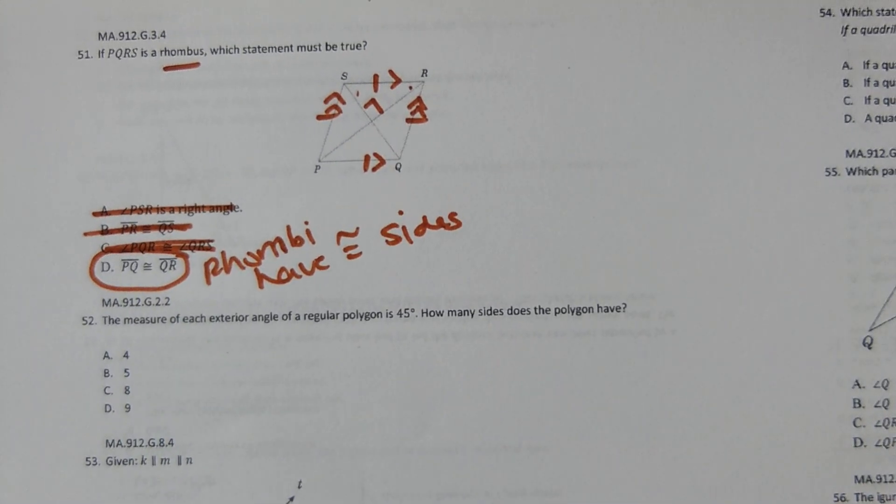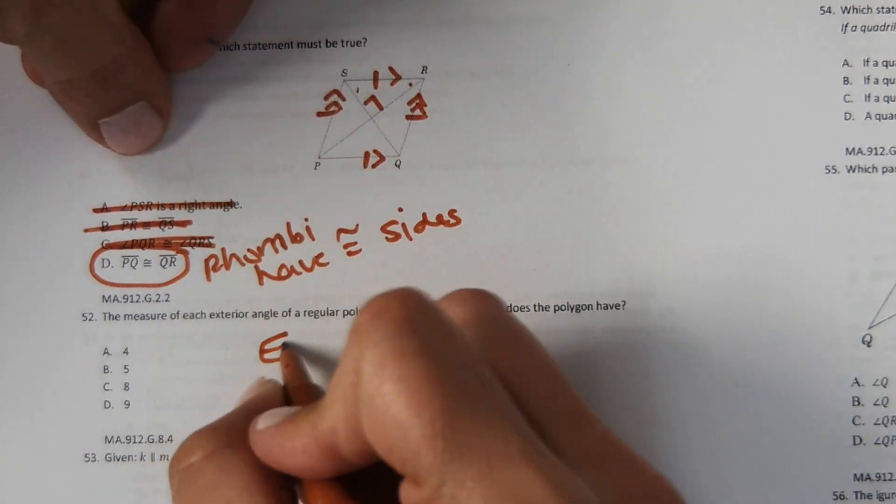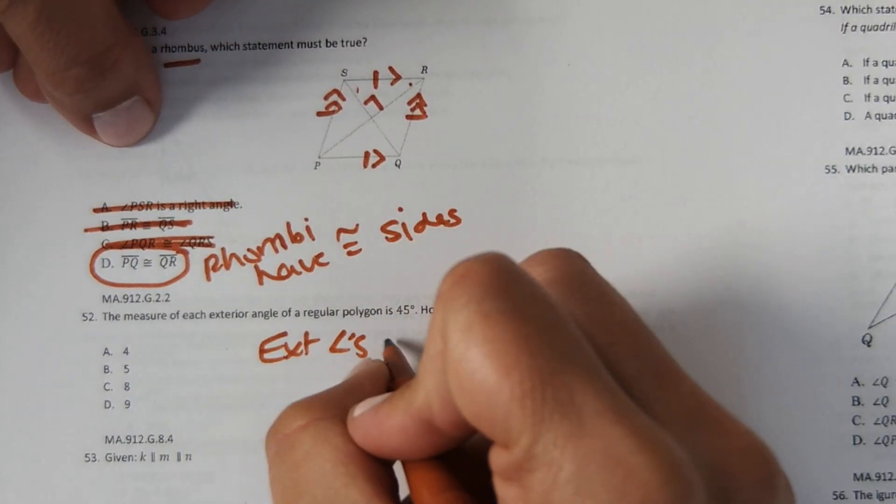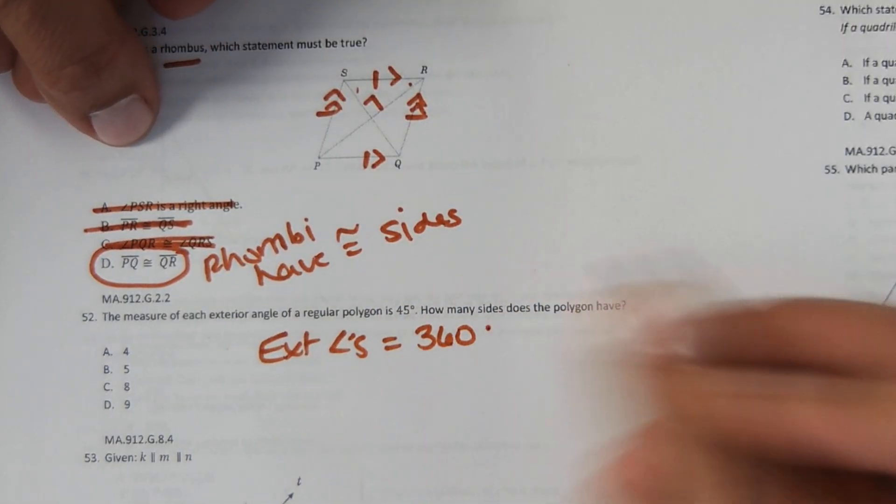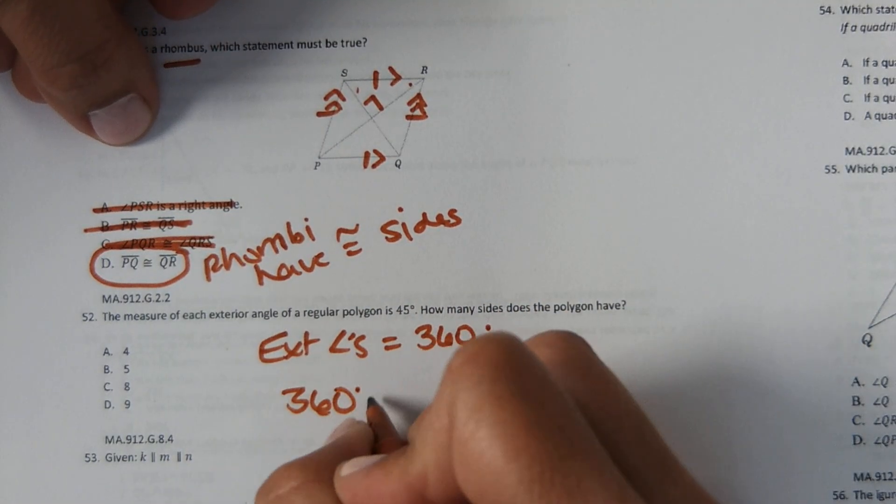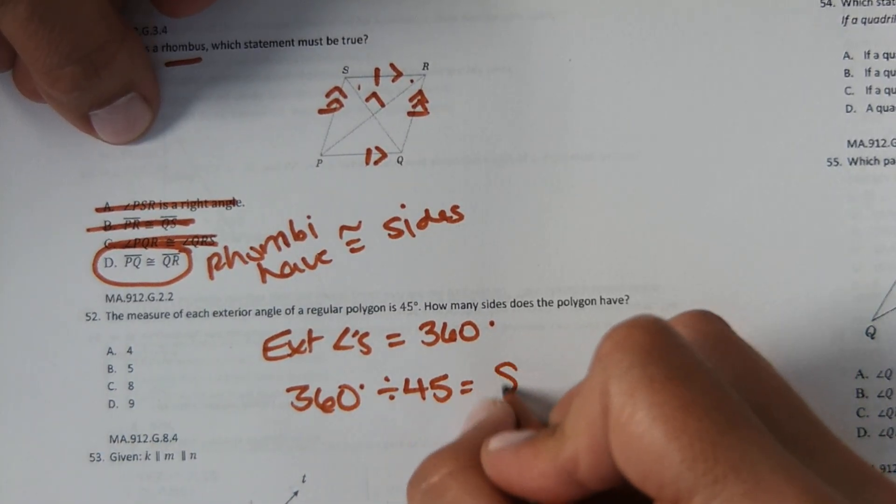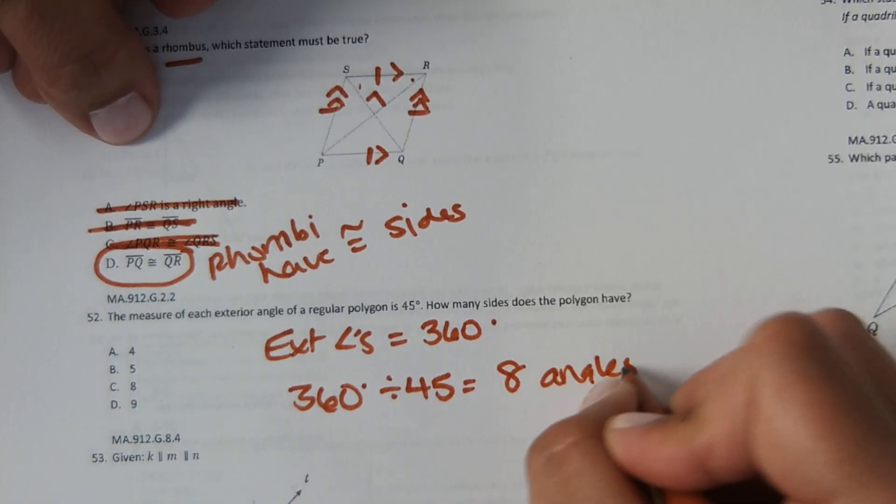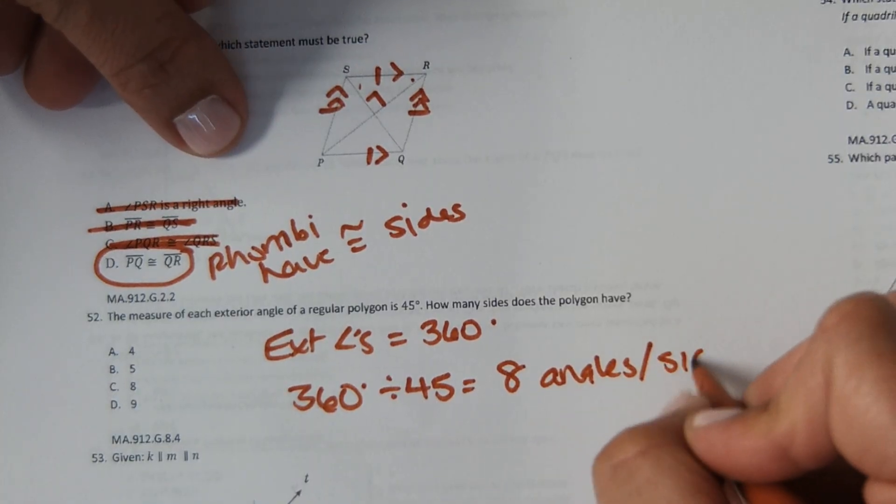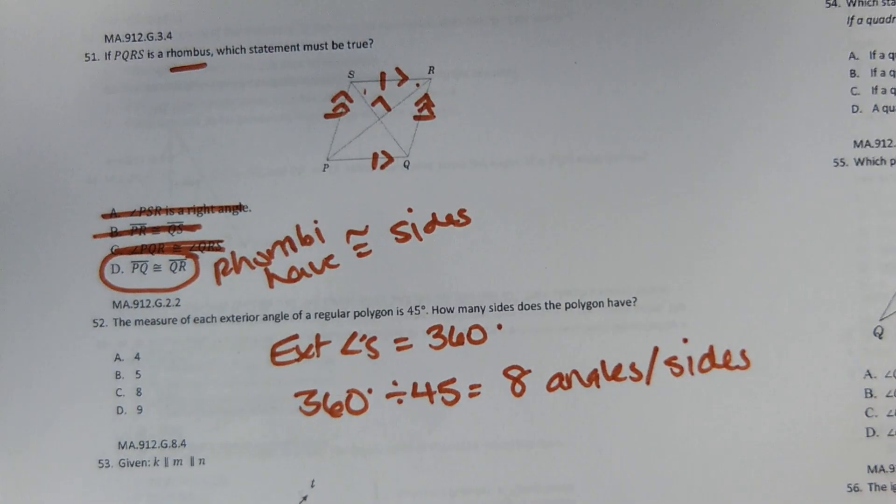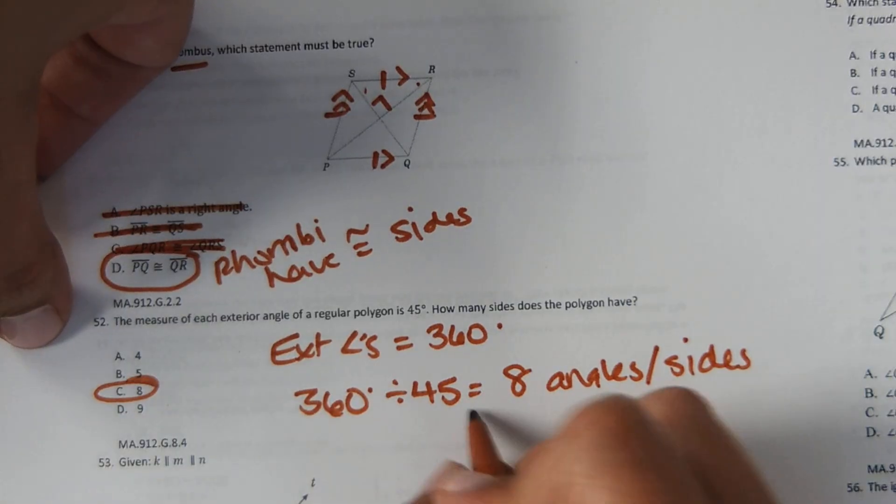Next question, the measure of each exterior angle of a regular polygon is 45 degrees. How many sides does the polygon have? Exterior angles of a convex polygon equal 360 degrees. So we can take 360 degrees divided by 45 and that will tell us how many angles the shape has. So 360 divided by 45 is 8 angles. The number of angles the shape has is the same as the number of sides. So it's an octagon.